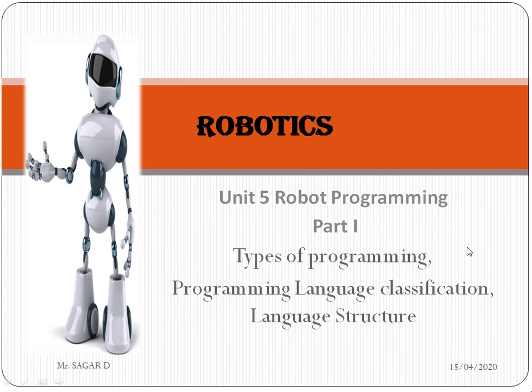This is Unit 5 of robotics, titled Robo Programming. We have divided this unit into two parts. In the first part, we will discuss the types of programming, programming language classification, and language structure. In the second part, we will discuss the line following algorithm, line following program, and direction and distance sensing by the robot.